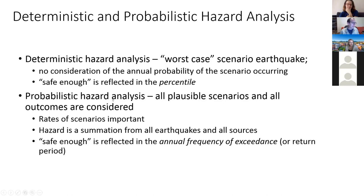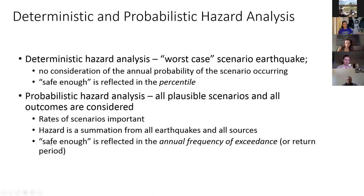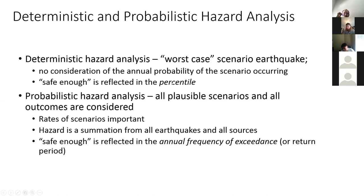The other form is probabilistic hazard analysis, where instead of just examining a worst case, we try to capture all plausible scenarios of earthquakes and all of the outcomes that could result. Rates of these scenarios are really important. Many of you are familiar with Gutenberg-Richter relations, where smaller earthquakes occur much more frequently than the largest earthquakes. For probabilistic analysis, safe enough is expressed using the annual frequency of exceedance or return period of the earthquake to determine what is safe enough.